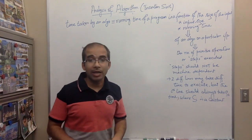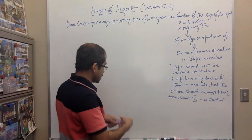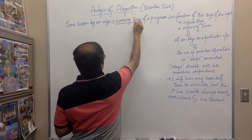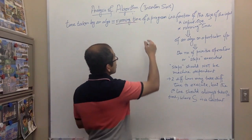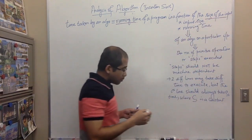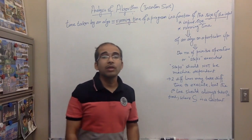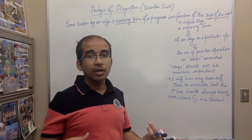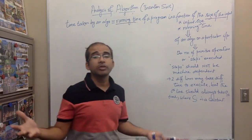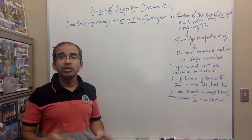The running time is a function of the size of the input. When we talked about the insertion sort sorting problem, we said that if the array is too large it will take longer, if the array is small it will take less time. This is very straightforward and understandable.